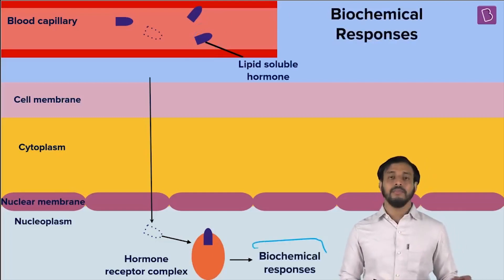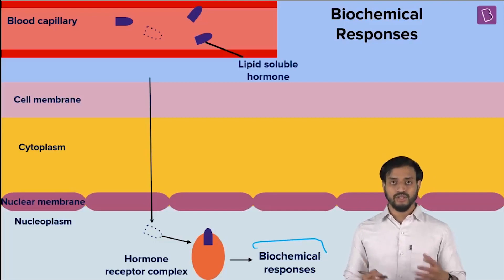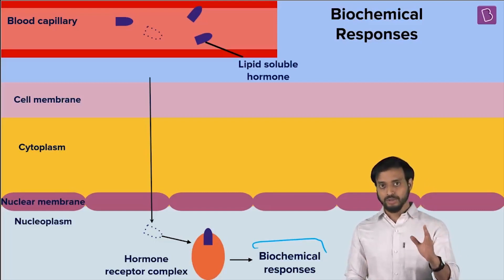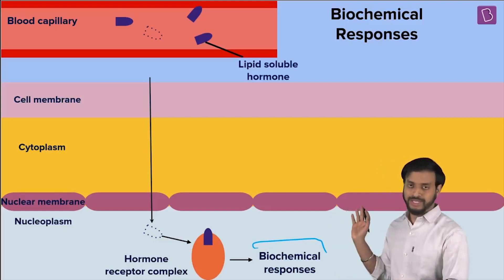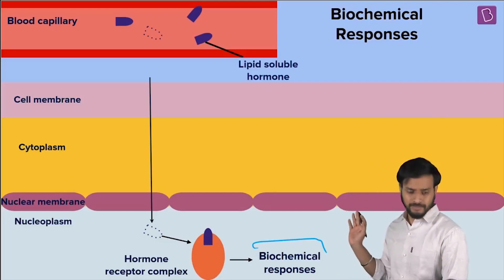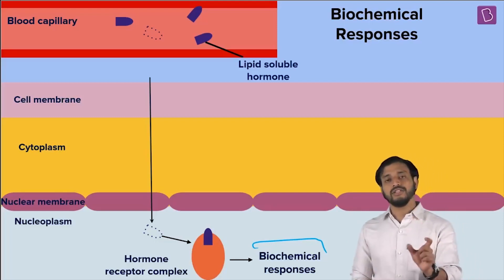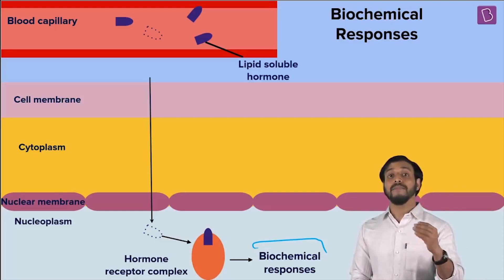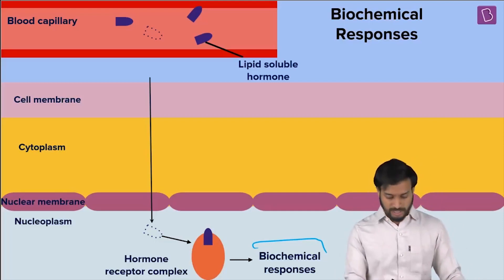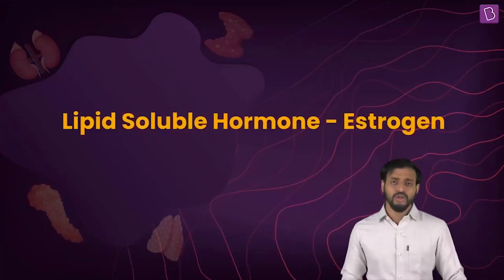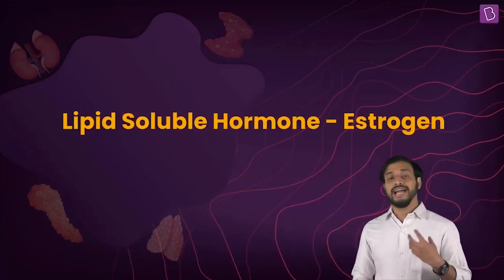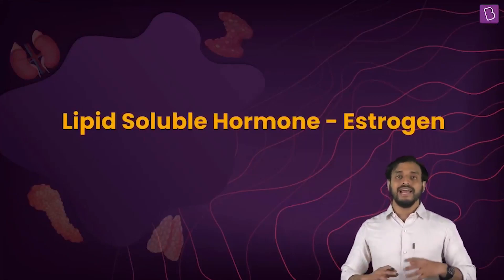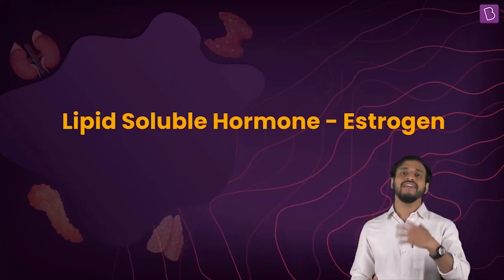These activated receptor proteins can undergo further changes to carry out various biochemical processes and responses. The key concept is simply the lipid soluble structure and the chemical composition of the membranes. Once these proteins get activated, they will undergo various changes resulting in various processes, and the end result is some of the physiological changes we observe.